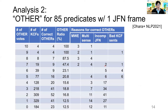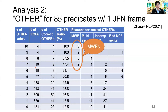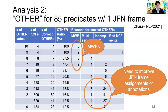Analysis 2: results for 'other' votes for 85 predicates with only one JFN frame — meaning these predicates are monosemous from JFN frame definitions. KCF frames with many 'other' votes contain multiple expressions or MWEs, consistent with the previous discussion. KCF frames with fewer 'other' votes have many multi-sense cases and incomplete JFN annotations. From this result, we need to improve JFN frame assignments or annotations by other means.